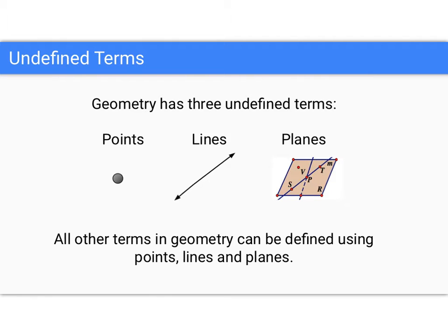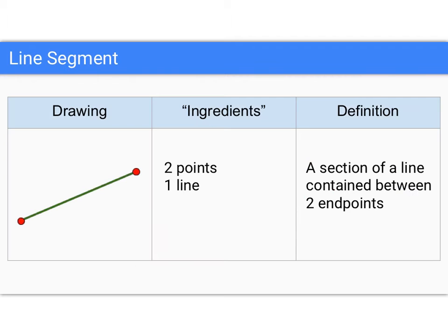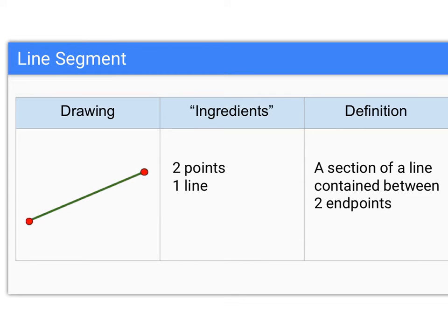They are what they are. So let's talk about things that we can build with these. I want you to think about these three things as your Legos. You can use points and a line to make a line segment. A line segment is just a part of a line.